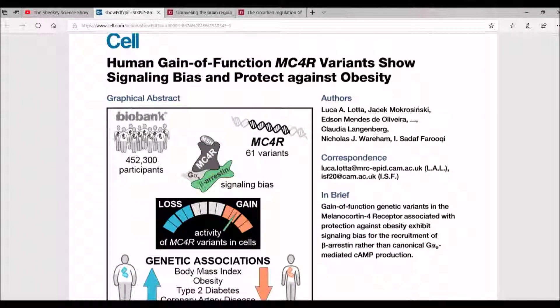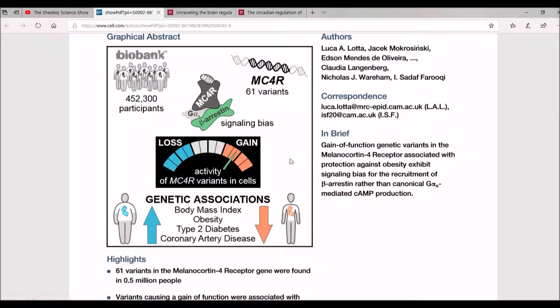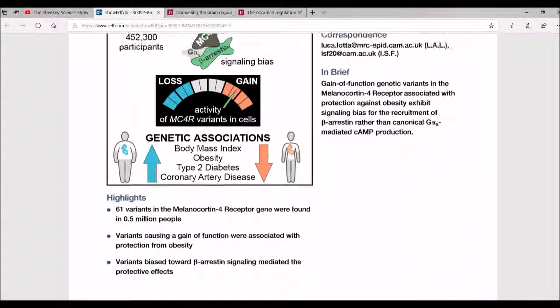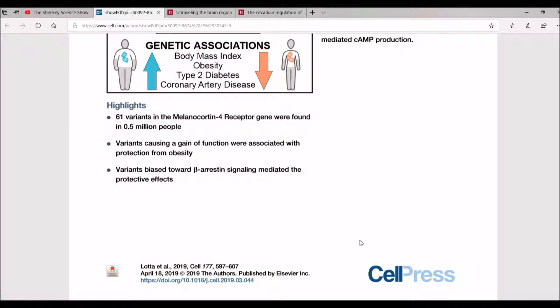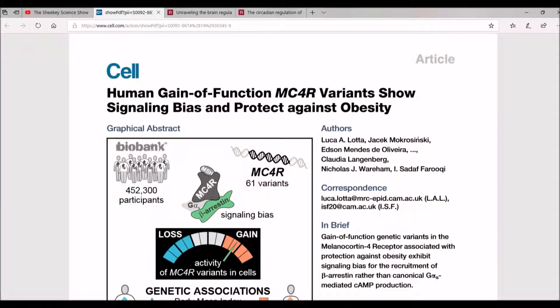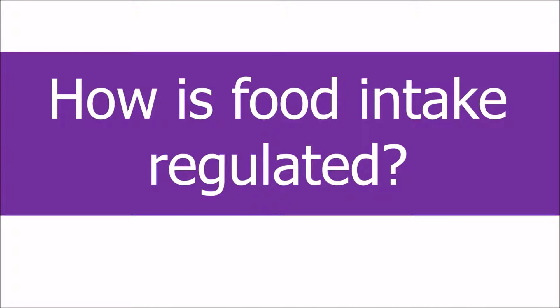And just to highlight a more recent example, this paper looks at genetic variants in the MC4R receptor protein and how different variants have been found that either have increased or decreased function and that can impact body mass index. So I hope from this video that you now have a much better understanding of how food intake is regulated.